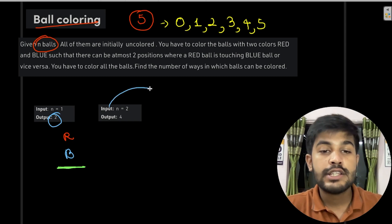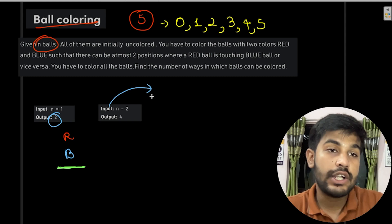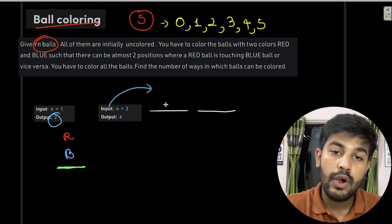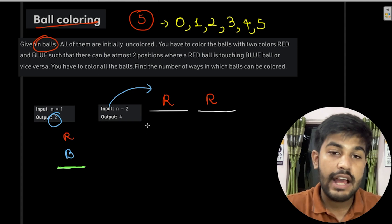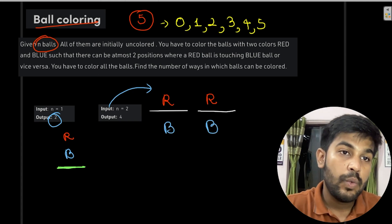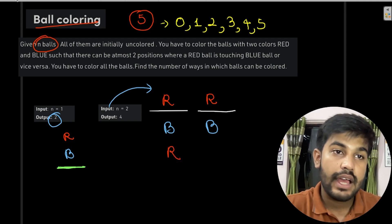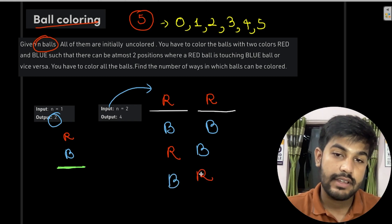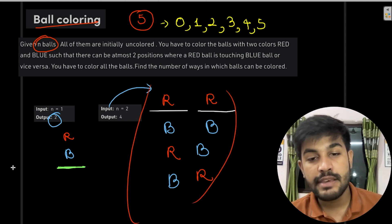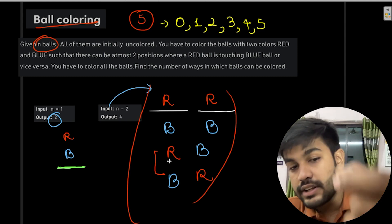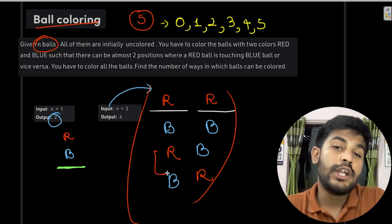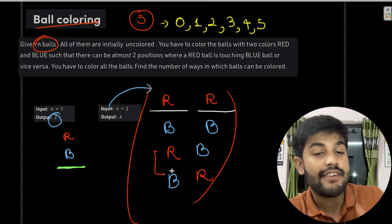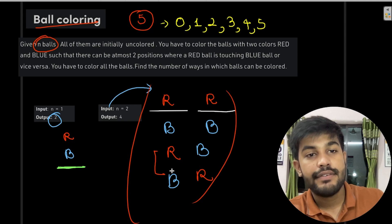Now let's solve for when the number of balls is two. We can have all balls red, all balls blue, the first ball red and second blue, or the first ball blue and second red. The last two differ because the positions are swapped, so the number of ways is 4.